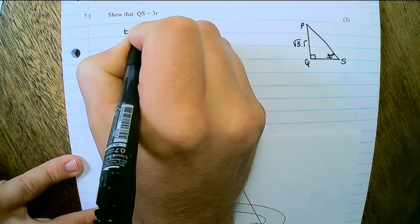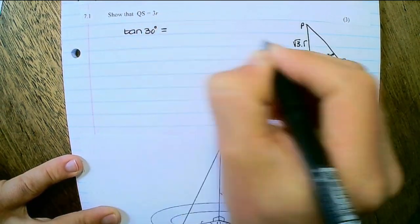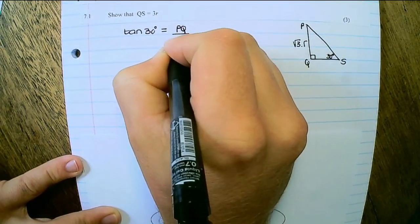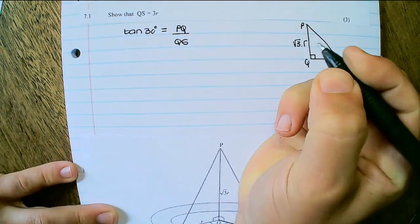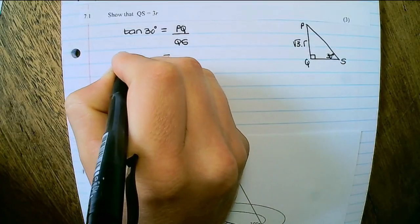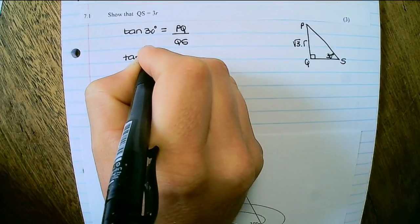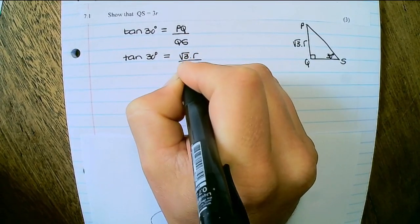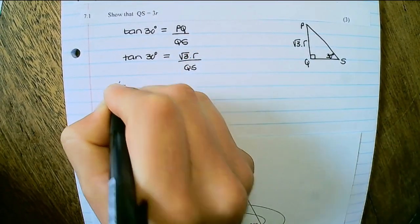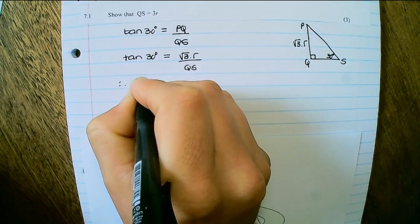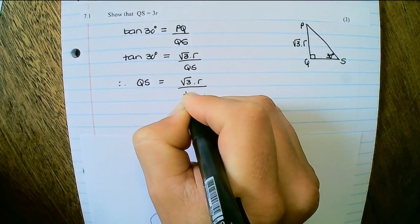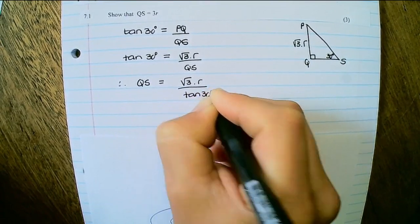So the tan of 30 degrees is equal to the opposite, which is PQ over QS. So that is, the tan of 30 degrees is equal to square root of 3R over QS. Therefore, QS would be equal to square root of 3 times R over the tan of 30 degrees.